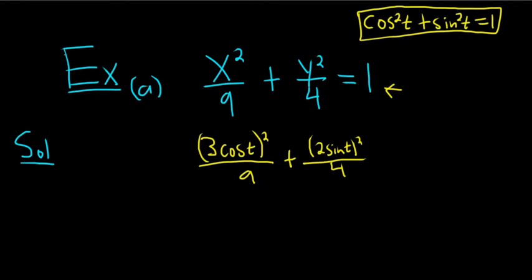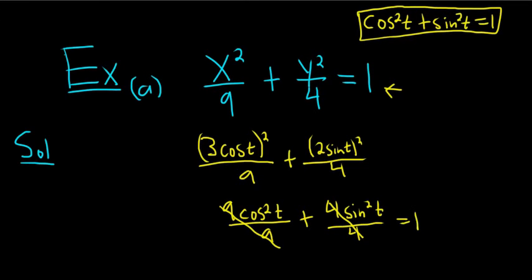And let's check, right? On the left here, we would get 9 cosine squared t. So 9 cosine squared t over 9 plus—and this is a beautiful method—4 sine squared t over 4. And these cancel. And there it is, beautiful. Cosine squared plus sine squared is equal to 1, so it checks.